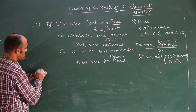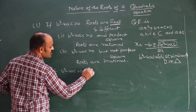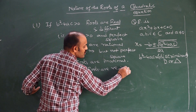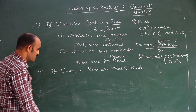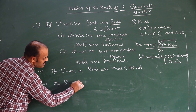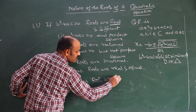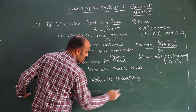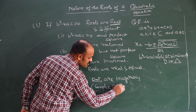If B²−4AC is equal to 0, roots are real and equal. If B²−4AC is less than 0, roots are not real — it means they are imaginary. We call them complex conjugate roots.